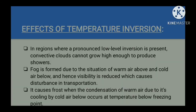Temperature inversion plays an important role in determining cloud forms, precipitation, and visibility. In regions where a pronounced low-level inversion is present, convective clouds cannot grow high enough to produce showers, because warm air lying over cold air doesn't allow clouds to condense. This condition is suitable for the formation of fog at the lower layer, which reduces visibility and causes disturbance in transportation. Sometimes frost also occurs, which damages agricultural crops.